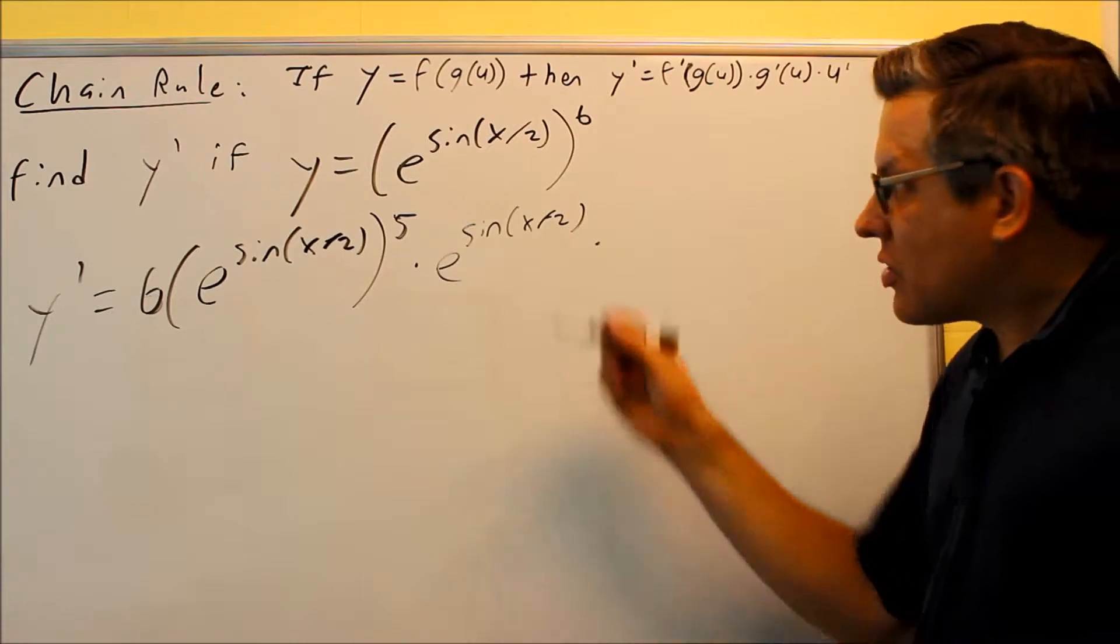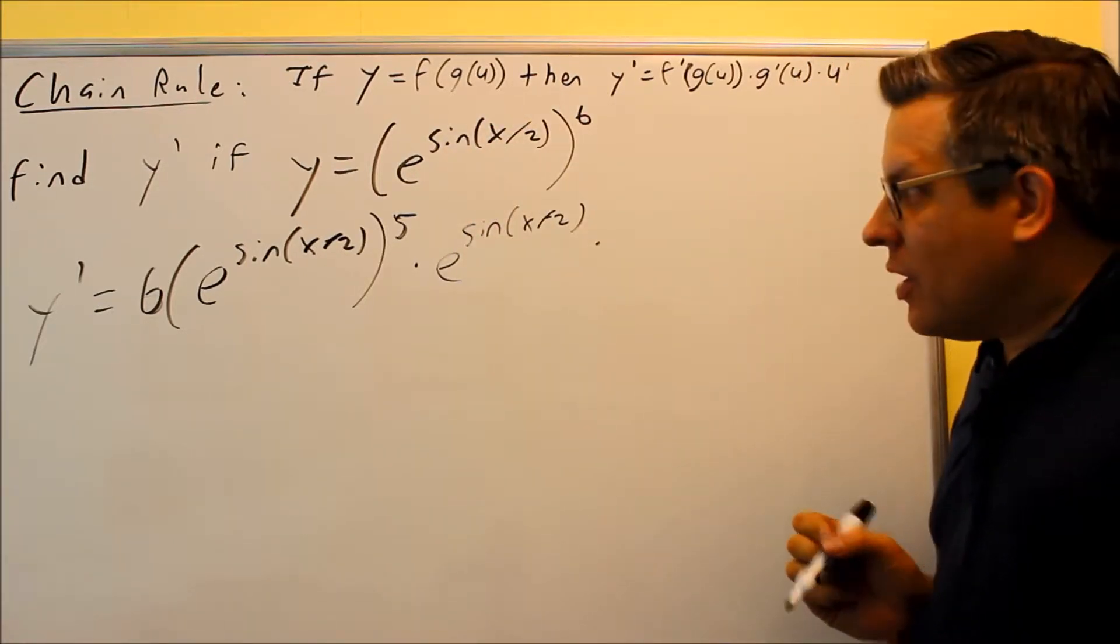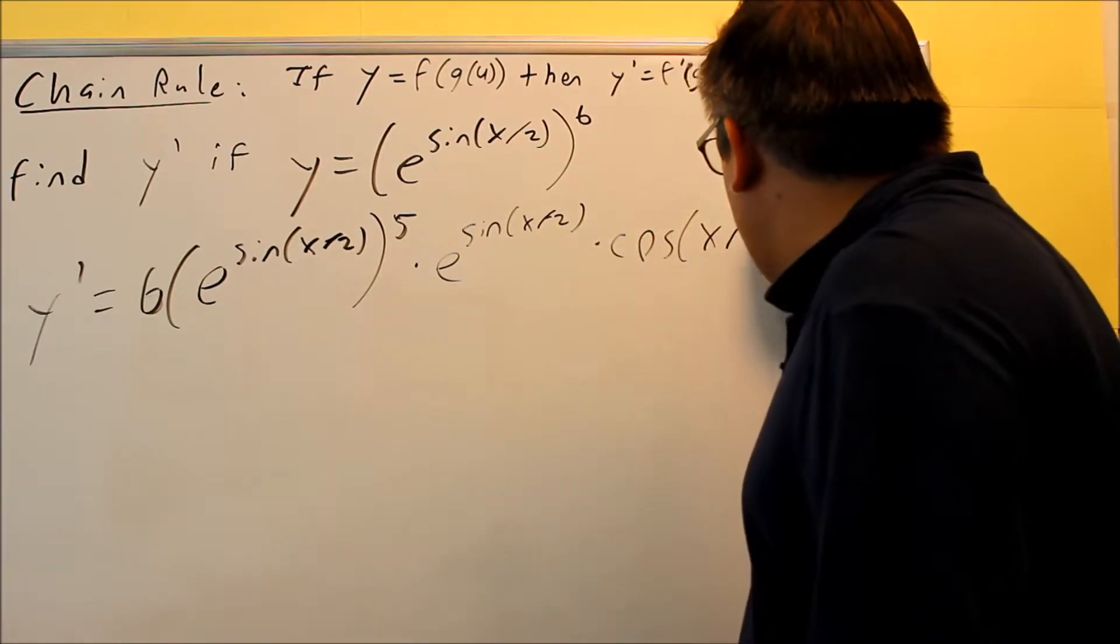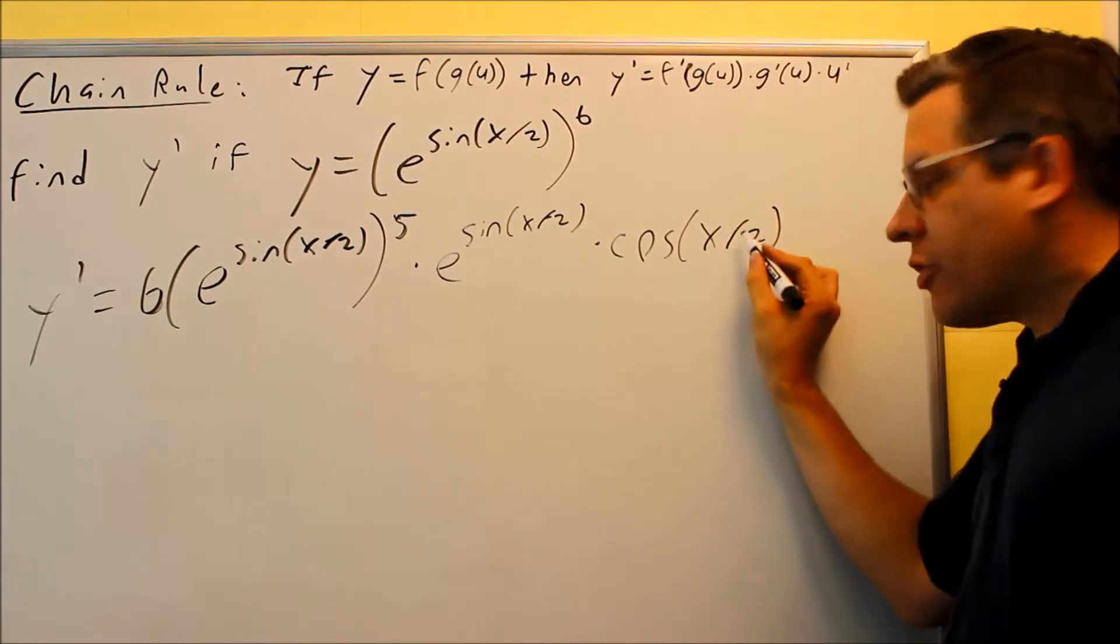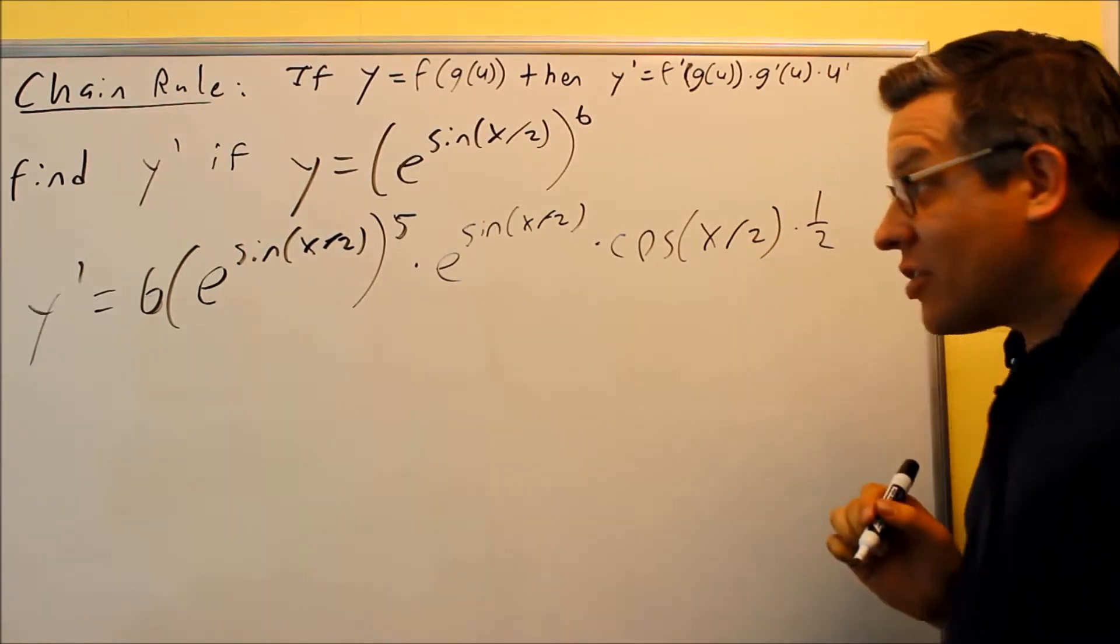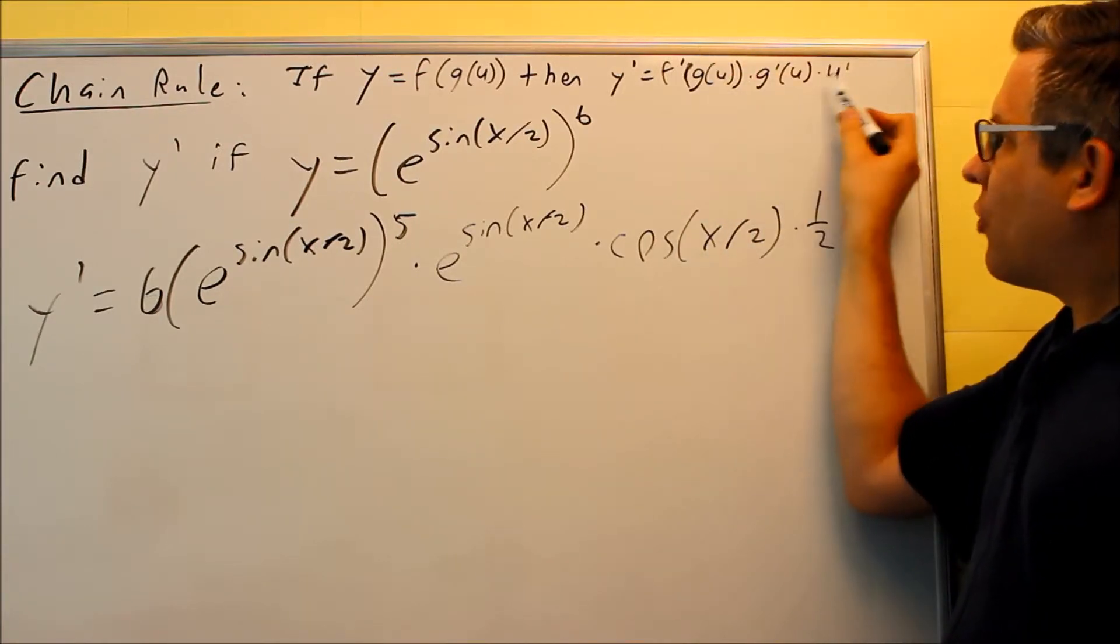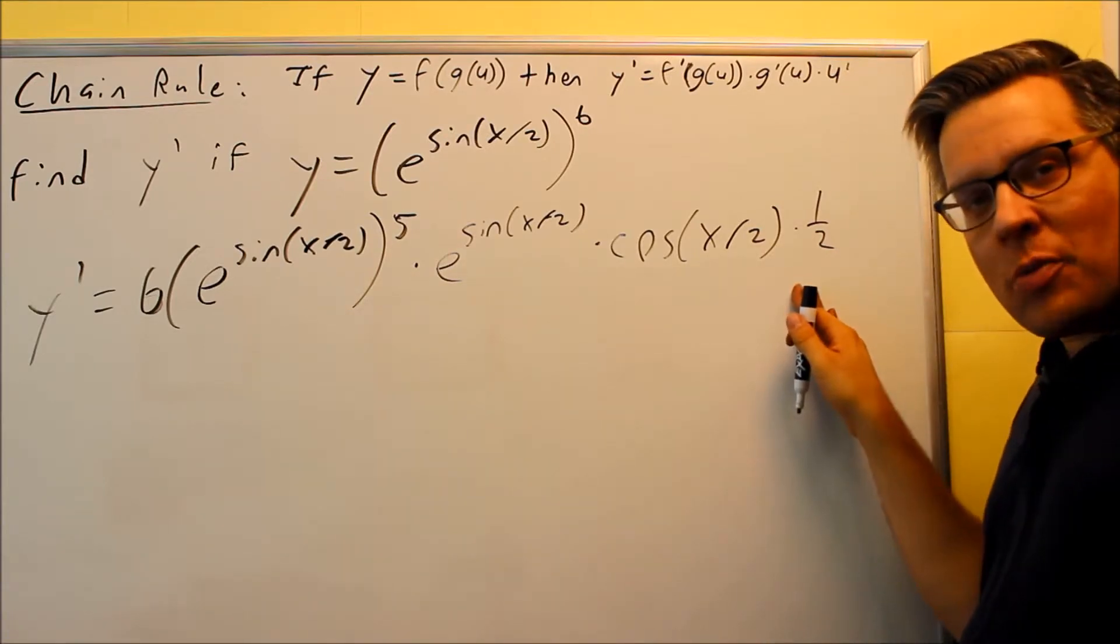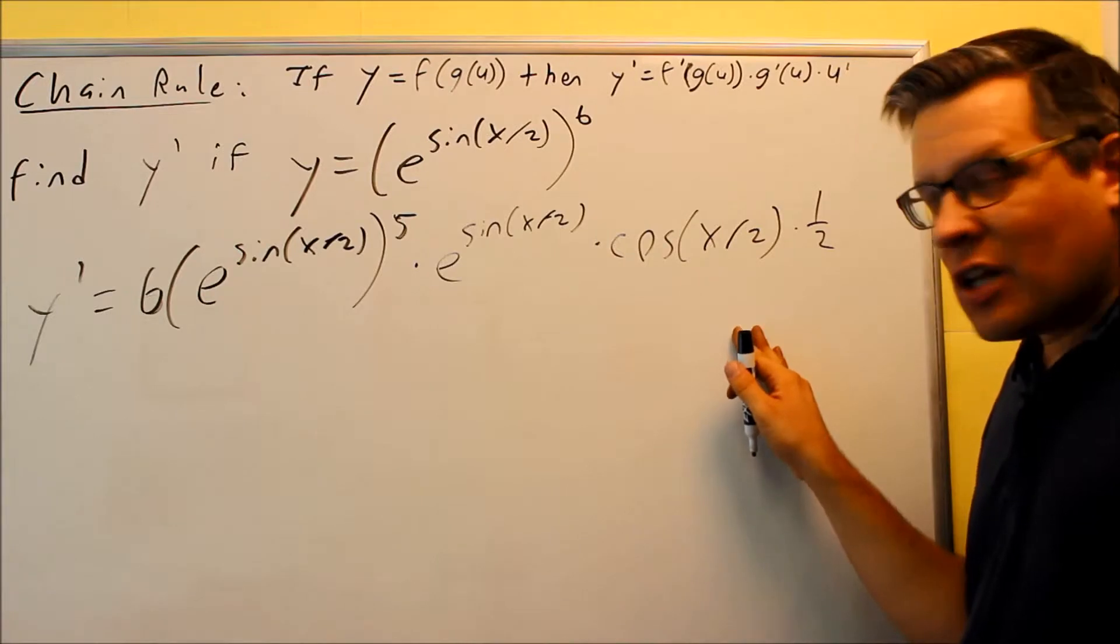The derivative of the exponent in this case, we want to do the derivative of sine x over 2. The derivative of sine is cosine x over 2. Don't forget, we have to also do the derivative of the inside part here. So actually, this problem, the problems I've done before have three terms there. This one has four terms. So this one I had to use the chain rule multiple times to get the answer.